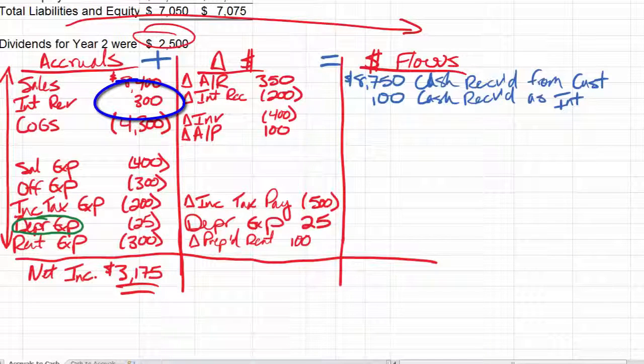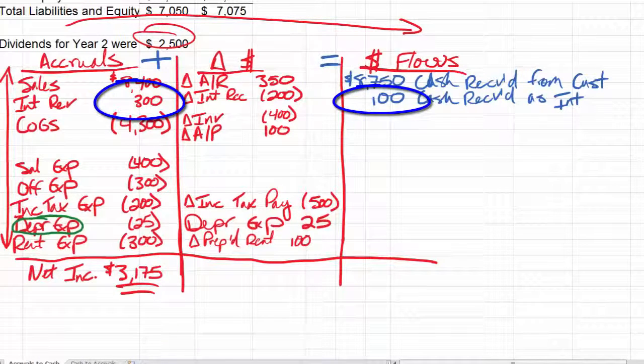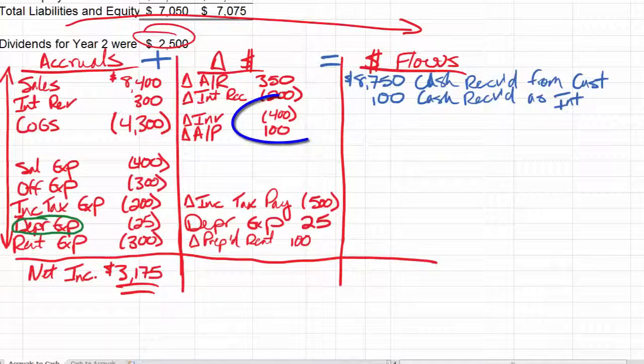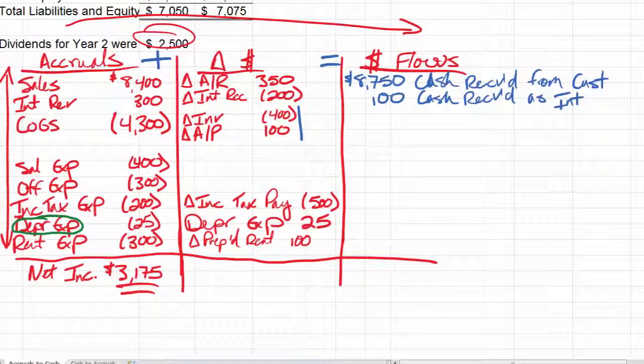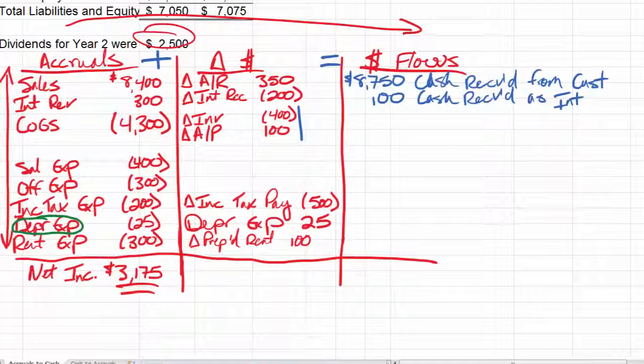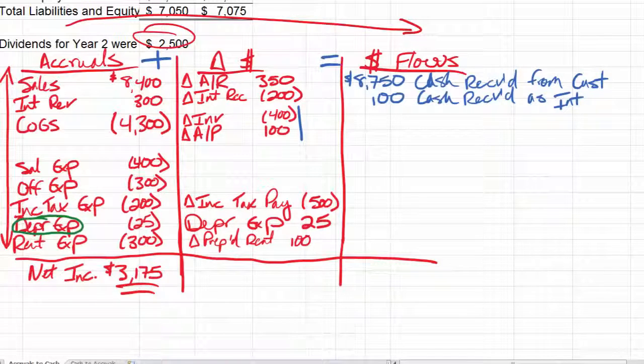Then we take 300 minus 200, plus a negative 200 gives me $100, cash received as interest. That's how we do this. The translation here is we earned $300 worth of interest but people haven't paid us yet. So even though we earned 300, checks have only come in for $100 worth. Now, cost of goods sold, we have two adjustments here. I always net out the change before I do the overall equation.